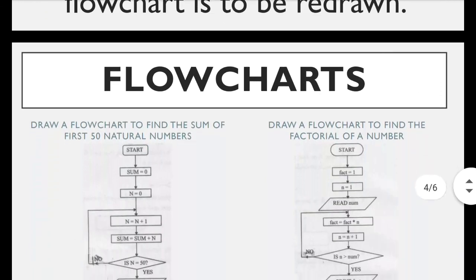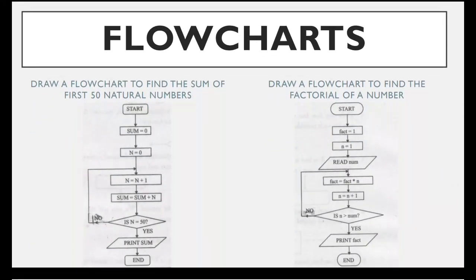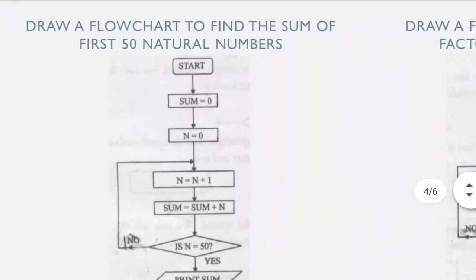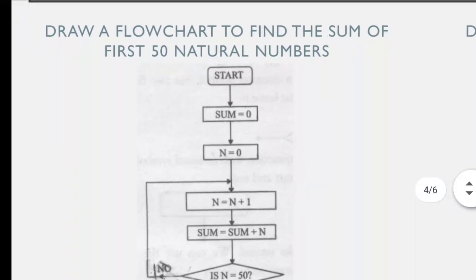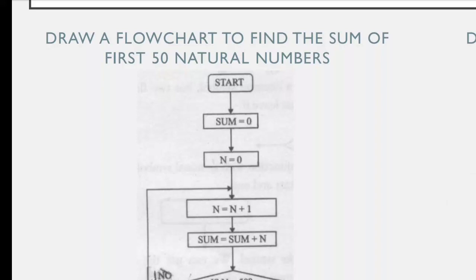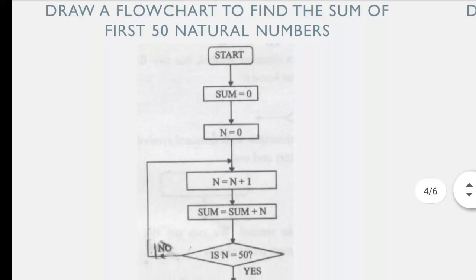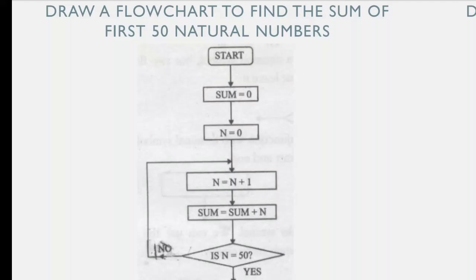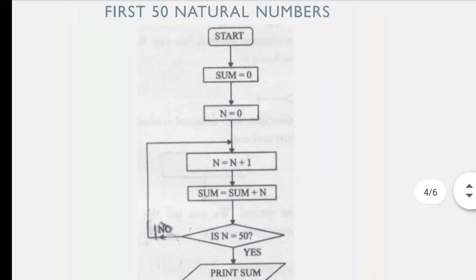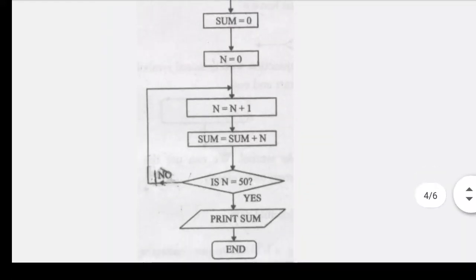Now we move to the next slide about flowcharts — practical examples of how flowcharts are made. The first example: draw a flowchart to find the sum of the first 50 natural numbers. First, we have the Start terminal symbol. After that we take input: sum equals to 0, and n equals to 0 is placed.